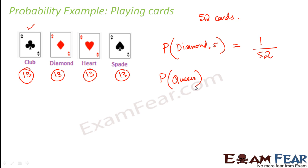Now, if I ask you what is the probability of getting a Queen — here I have not mentioned whether it has to be a Diamond Queen, Heart Queen, Club Queen or Spade Queen. It could be any of these Queens. The total possible outcomes is still 52. How many cards which are Queen exist in these 52 cards? Total number of Queens in a pack of 52 cards is 4 — 1 Queen for Club, 1 for Diamond, 1 for Heart and 1 for Spade. So the probability of getting a Queen would be 4 by 52.